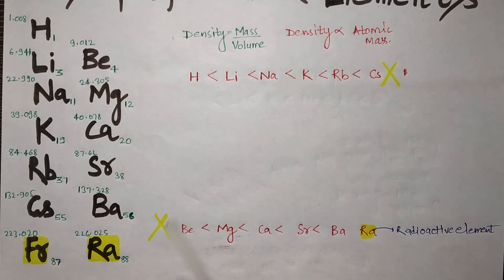Now let's talk about beryllium, magnesium, calcium, strontium, barium. What is the order? Beryllium density would be less than magnesium, which would be less than calcium, less than strontium, less than barium, because atomic mass increases going down.